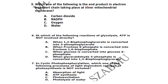Which one of the following is the end product in the electron transport chain taking place in the inner mitochondrial membrane? The end product in the electron transport chain taking place in the inner mitochondrial membrane is water.